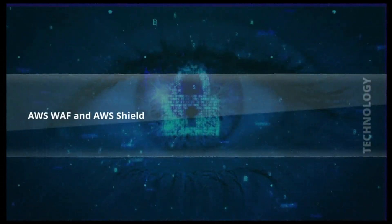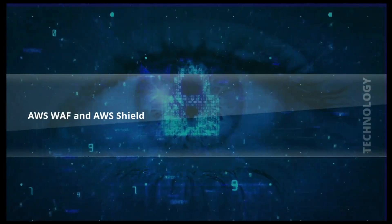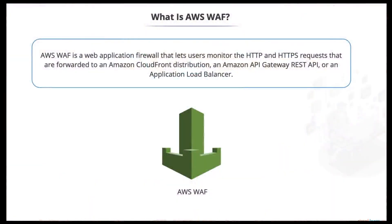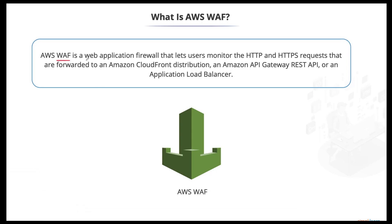Welcome to AWS. In this video we are going to talk about AWS WAF and AWS Shield. WAF, also referred to as the web application firewall, is a set of rules that we can apply to any distributions in AWS to have complete control on how they are distributed and what kind of rules are going to govern them. WAF allows us to monitor the HTTP and HTTPS requests.